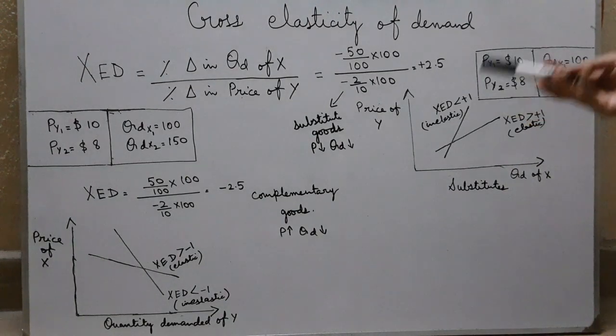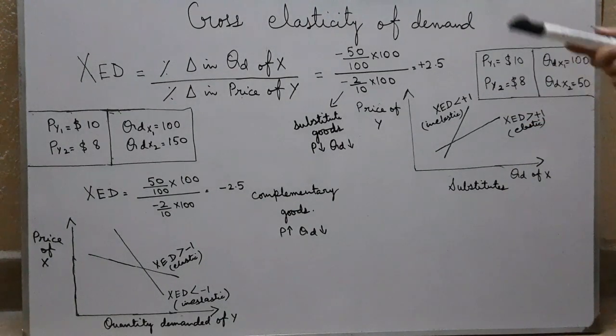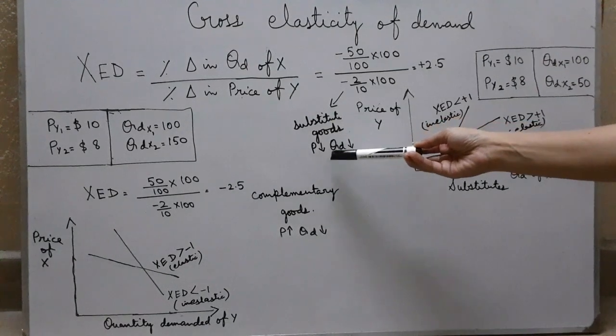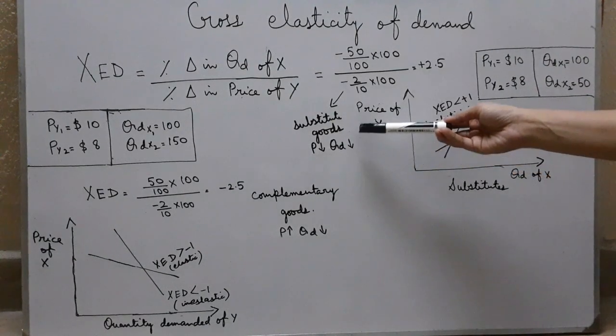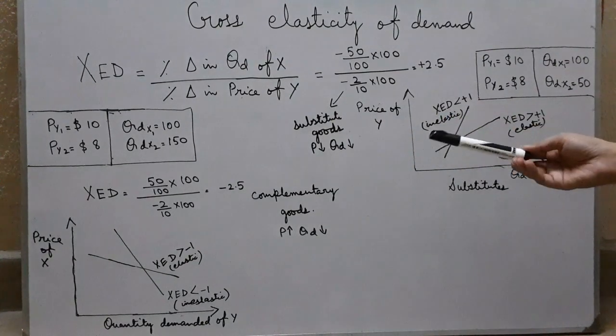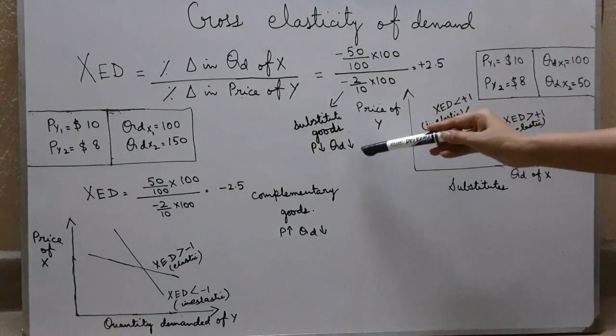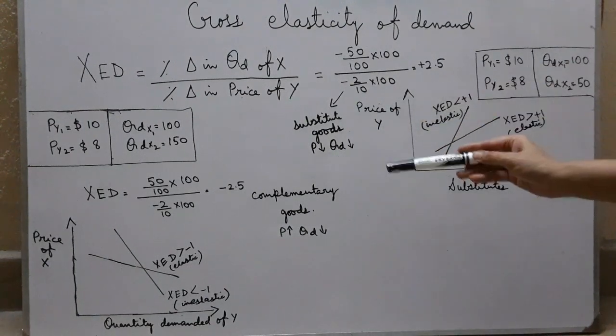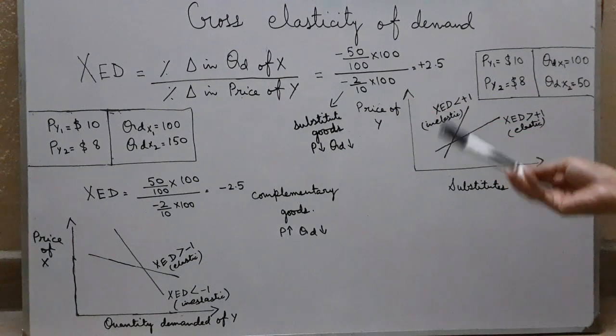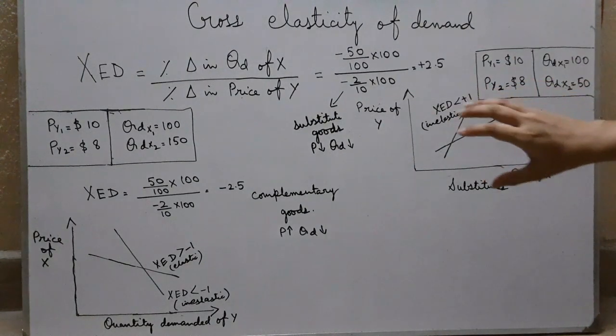Now what's the relationship between two substitute goods? If the price of Pepsi goes down, the quantity demanded of Coca-Cola would decrease as well. Why? Because the consumers of Coca-Cola would consider it cheaper to buy Pepsi, and so they will switch over to the consumption of Pepsi. So that's a positive relationship.